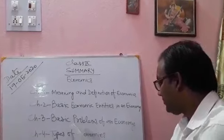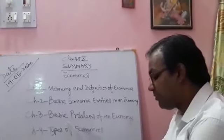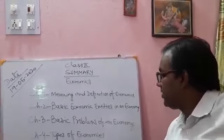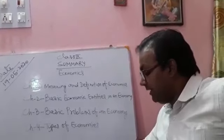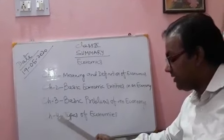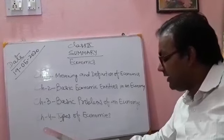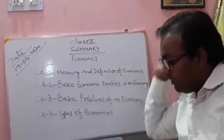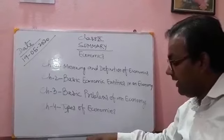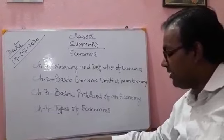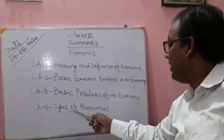In the fourth chapter, you have to study about the types of economy — basically three types: capitalist economy, socialist economy, and mixed economy. Each type has its own features, definitions, and qualities. You have to study the main features, merits, and demerits of each, as well as the distinctions between them. The economy is also classified on the basis of level of development into developed economy and underdeveloped or developing economy, and their distinctions are also part of the fourth chapter.